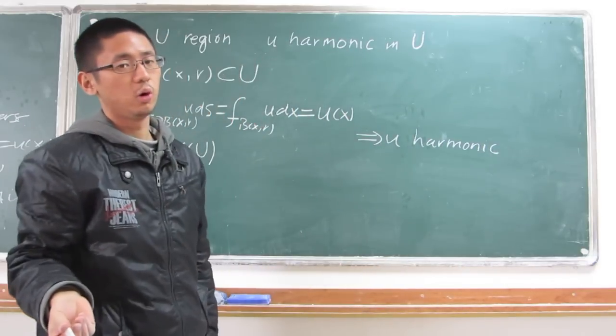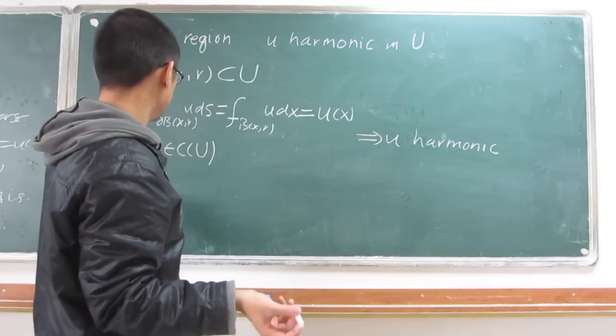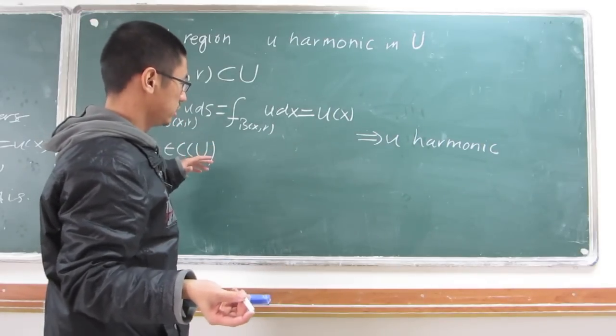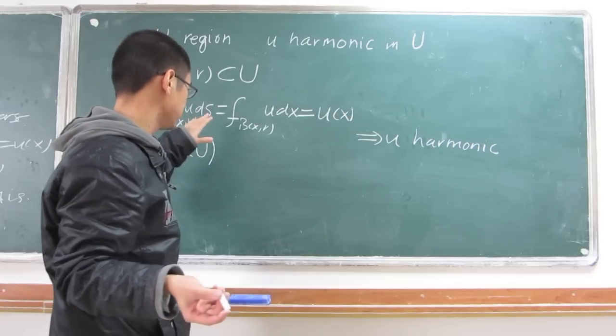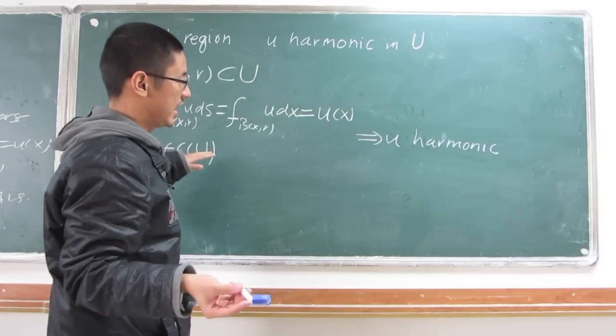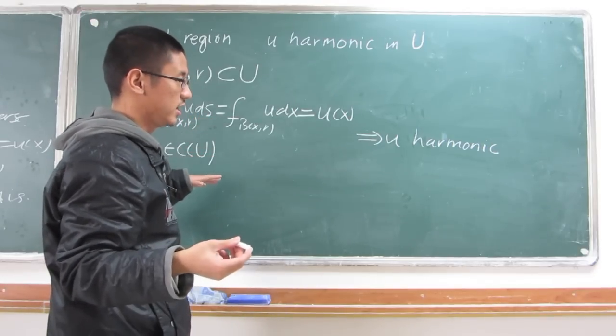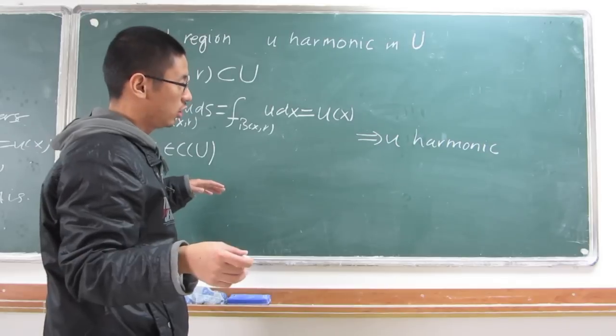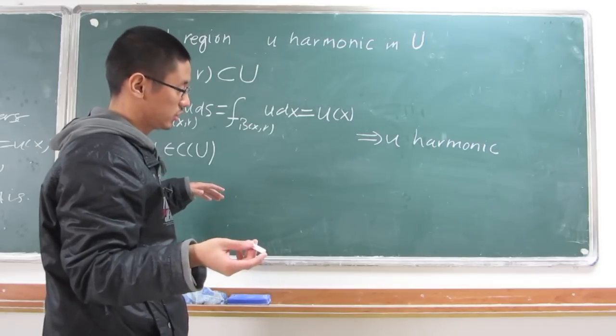What's more, modify a harmonic function by convolution and use this formula. We can deduce that a harmonic function is actually smooth and analytic, though by definition it's just a C2 function.